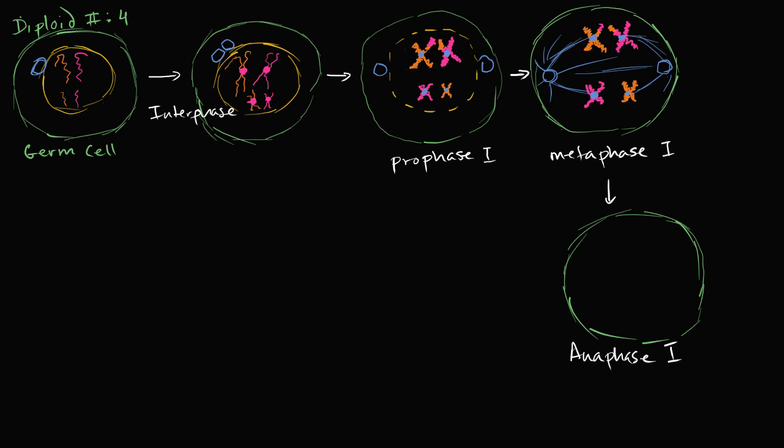So let me draw that. So this homologous pair up here gets pulled apart. The two sister chromatids do not get pulled apart here. So you have this one getting pulled onto this side. It has a little bit from the original. And then you have this one getting pulled on this side.